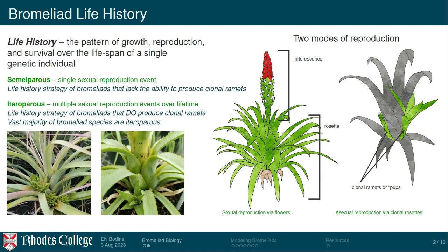When we talk about patterns of growth and reproduction and their relative timing, this is often called life history. Two strategies are important here. First, semelparity: a small selection of bromeliad species cannot produce clonal ramets and therefore have one shot at sexual reproduction — think of this as the salmon strategy. Most bromeliads, however, do produce clonal ramets and have multiple iterative opportunities for sexual reproduction. This is called the iteroparous life history strategy. Semelparous: one shot. Iteroparous: many opportunities.